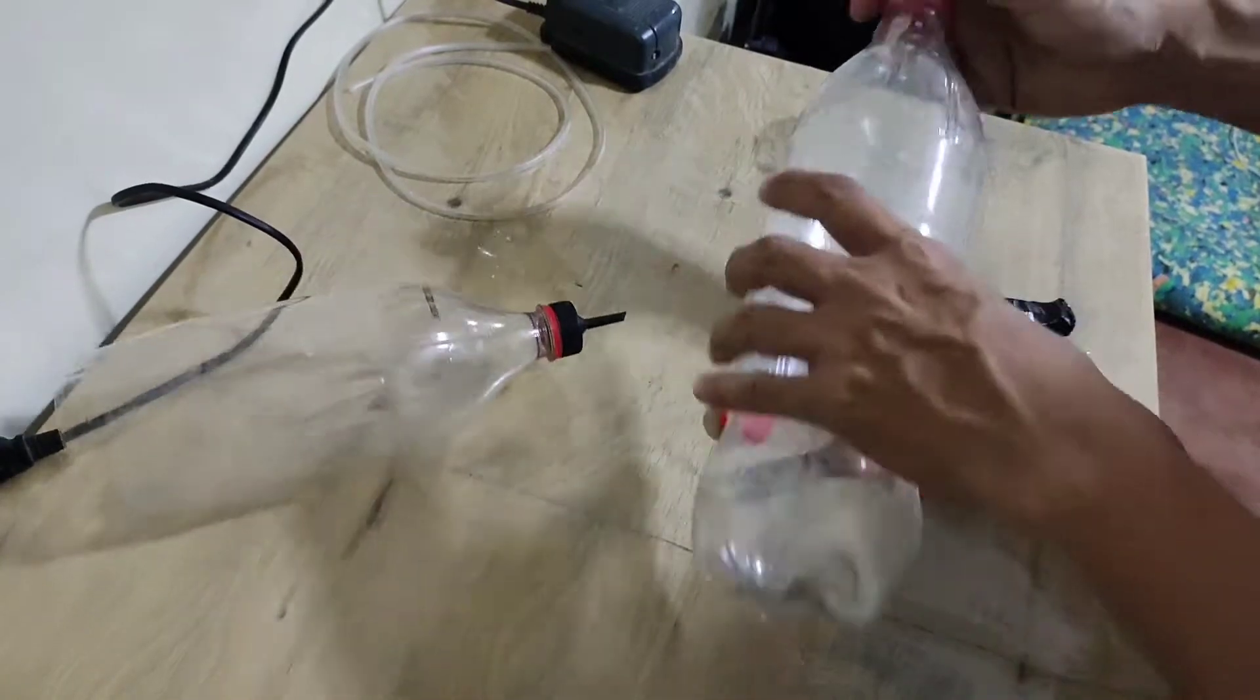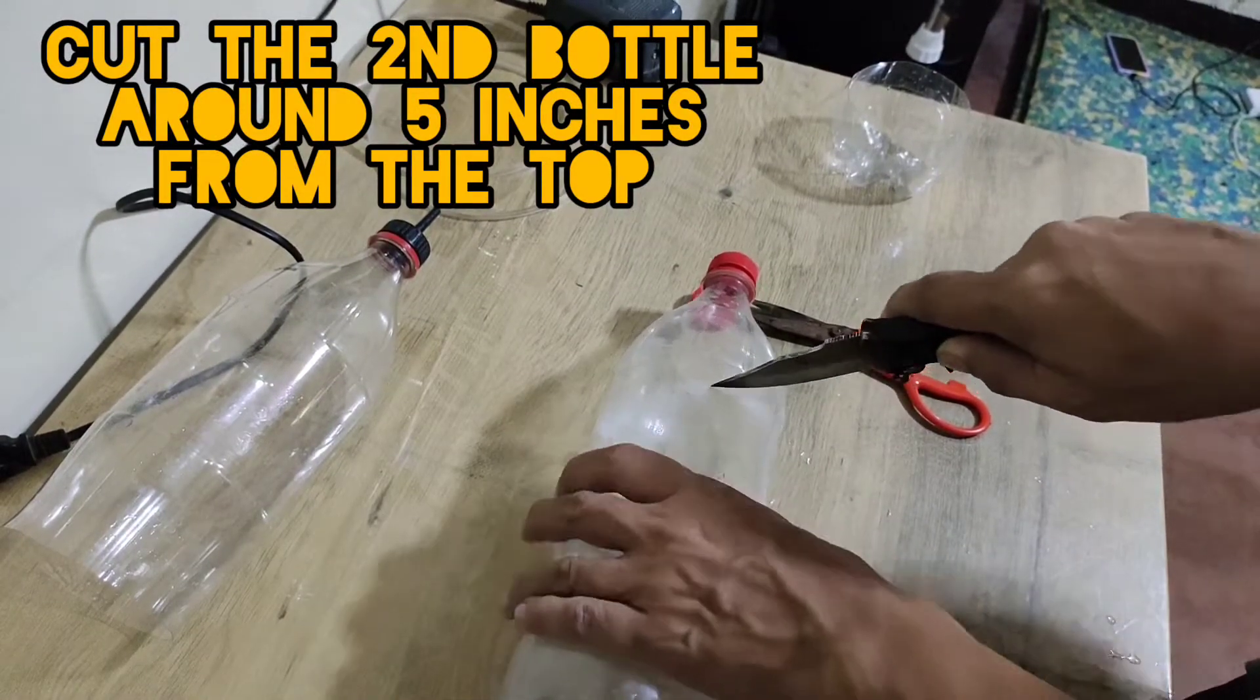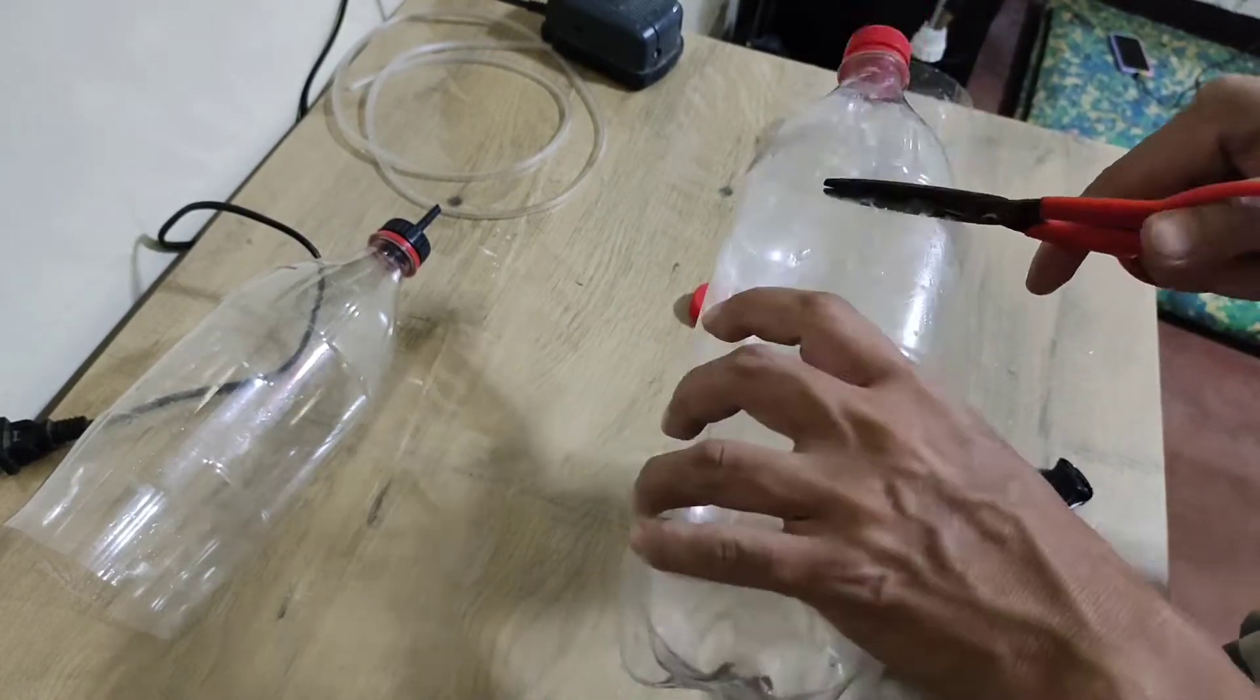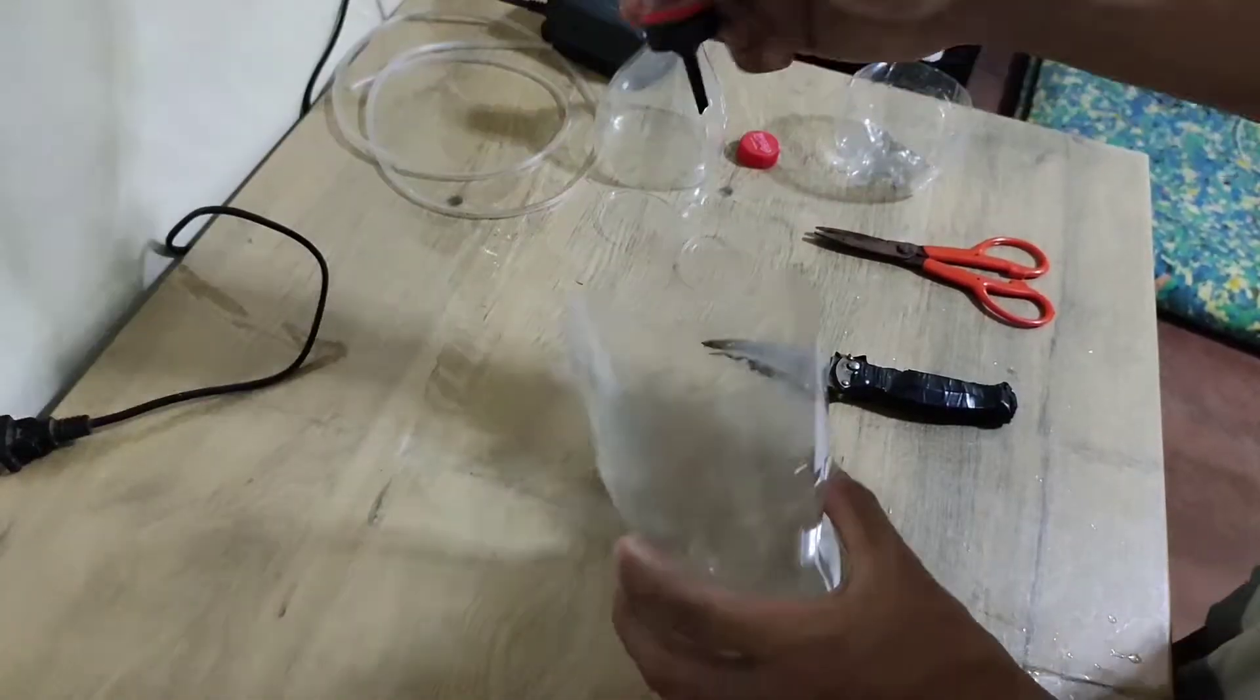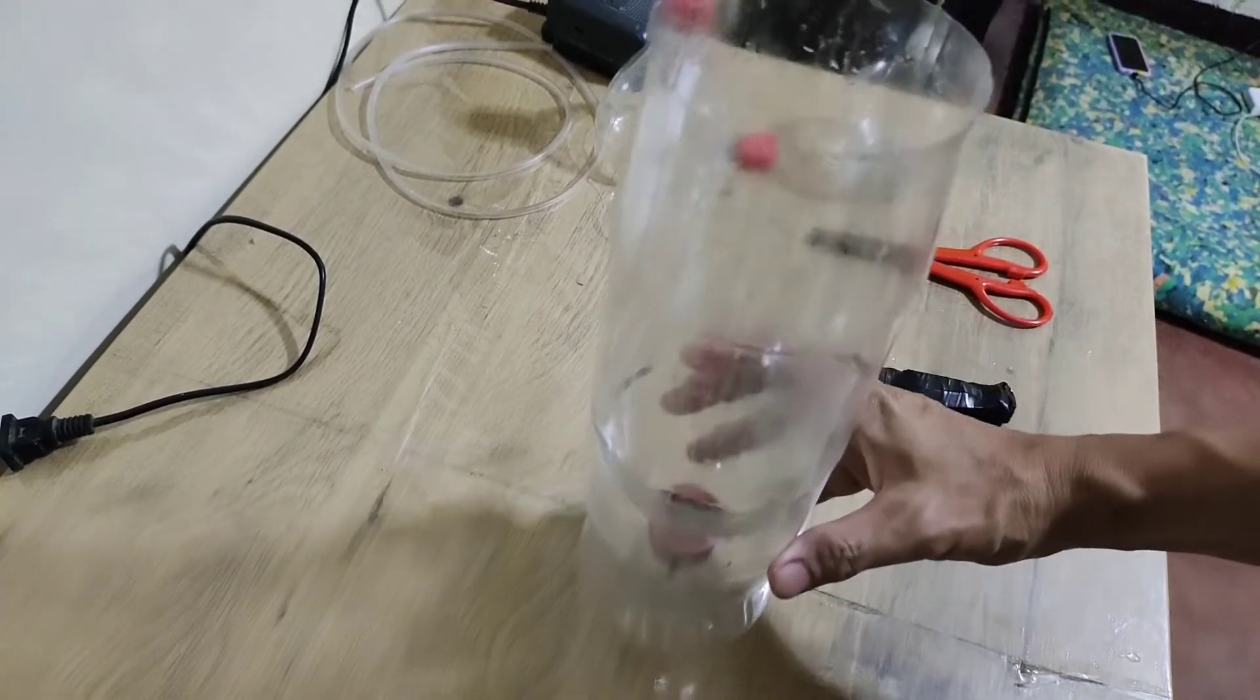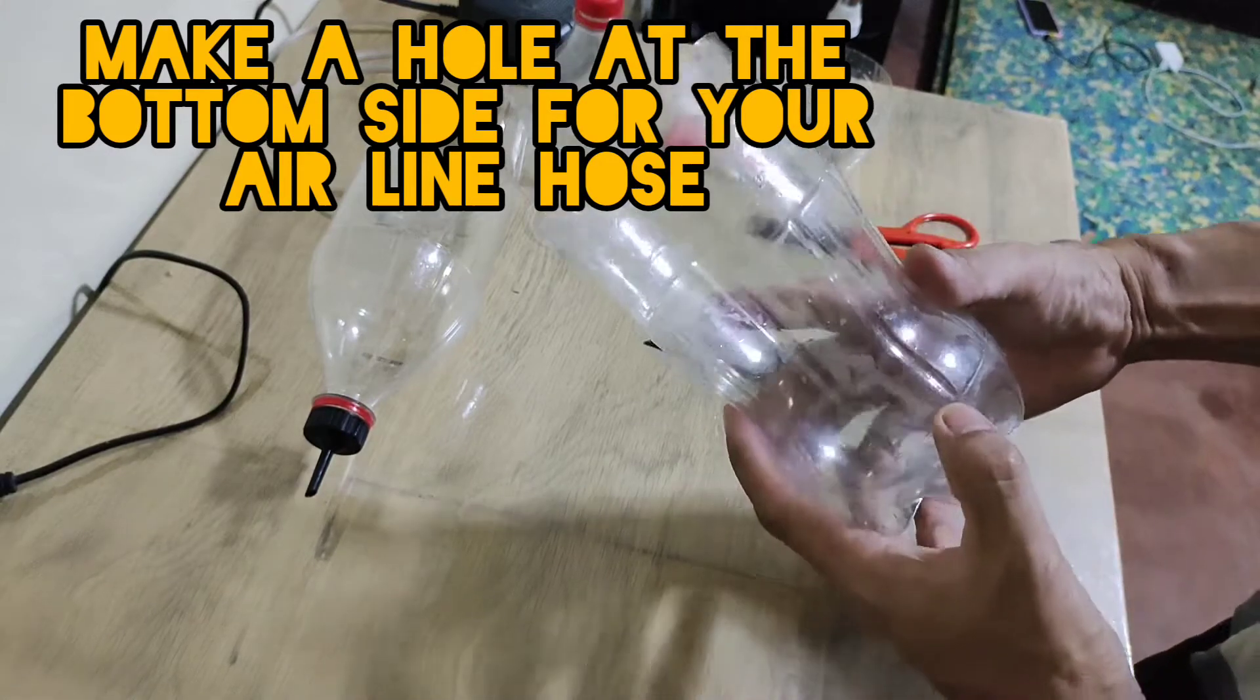Then we need this second bottle to make a base so our hatchery can stand on its own. We need to make an opening by cutting around five inches from the top. Now let's check how this hatchery would fit on its base - it fits perfectly. Let's put a hole on the side so our airline tubing can pass through.